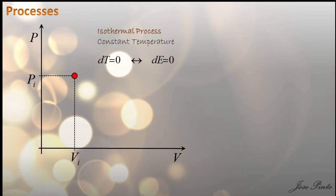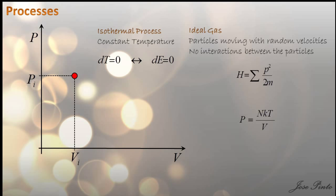An ideal gas is a theoretical gas composed of a set of randomly moving, non-interacting point particles. The ideal gas concept is useful not only because of the simplicity of its equation of state, but because it has applications everywhere in science. At normal conditions, such as standard temperature and pressure, most real gases behave like an ideal gas.